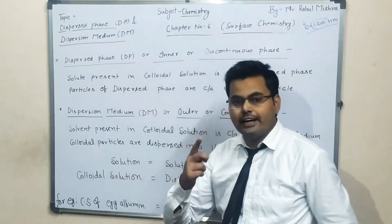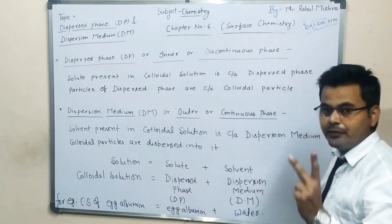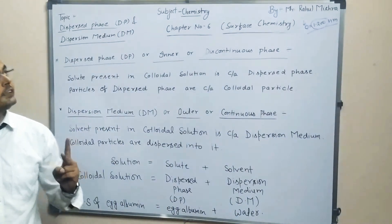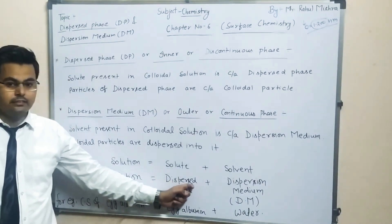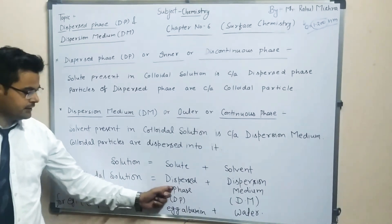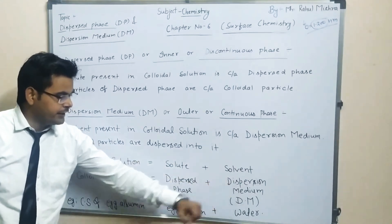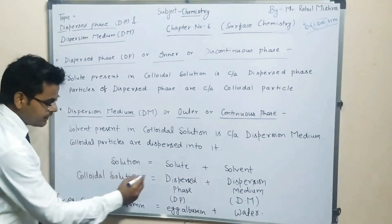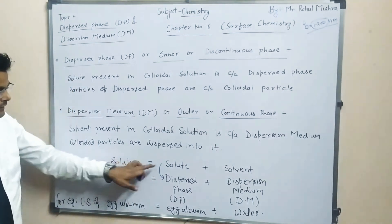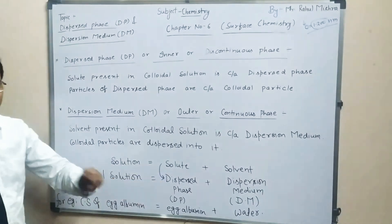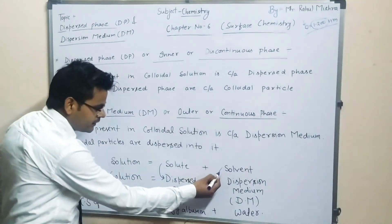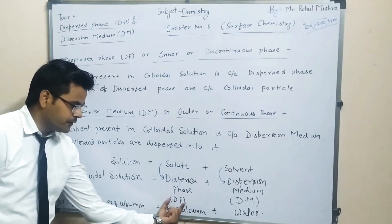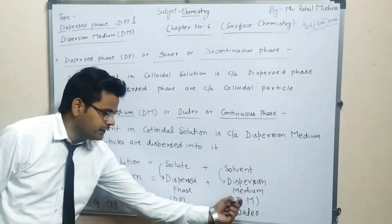Colloidal solution is also made up of two components. The first component is dispersed phase and the second component is dispersion medium. The solute present in colloidal solution is called as dispersed phase, and the solvent present in colloidal solution is called as dispersion medium — DP means dispersed phase and DM means dispersion medium.